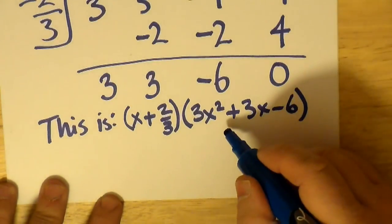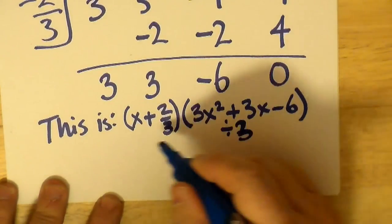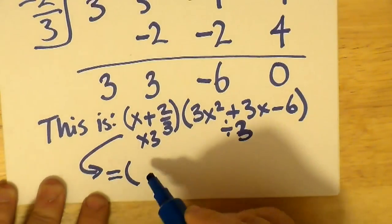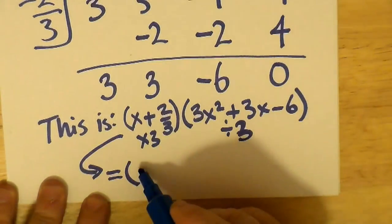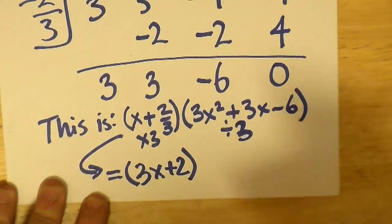As you can see, the first factor can be multiplied by 3, and the last factor, the trinomial, can be divided by 3. We'll just correct that. Okay, so that has the effect of really doing the same thing.